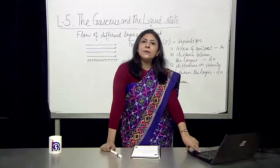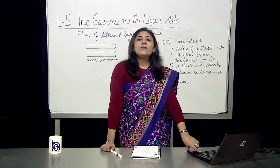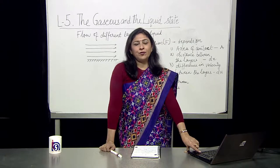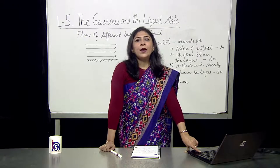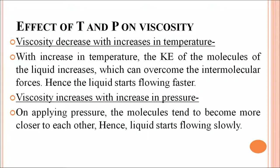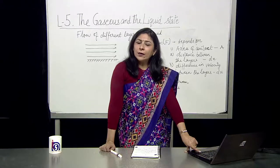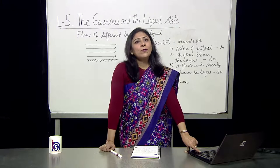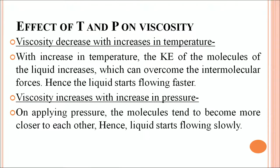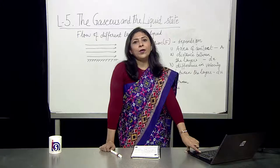Viscosity depends on temperature and pressure. Viscosity decreases with increase in temperature — with increasing temperature, kinetic energy of the liquid molecules increases, which can overcome the intermolecular forces, hence the liquid starts flowing faster. If you heat it, the liquid becomes less viscous. Viscosity increases with increase in pressure — on applying pressure, molecules tend to become closer to each other, hence the liquid starts flowing slowly.